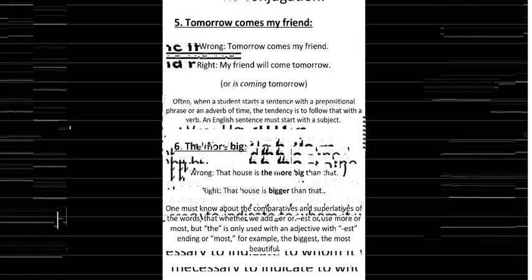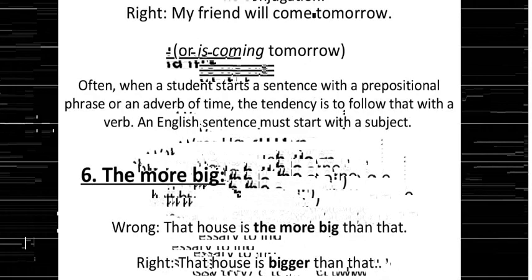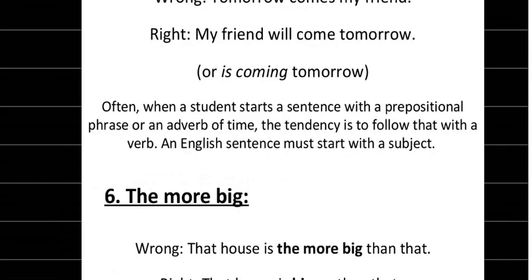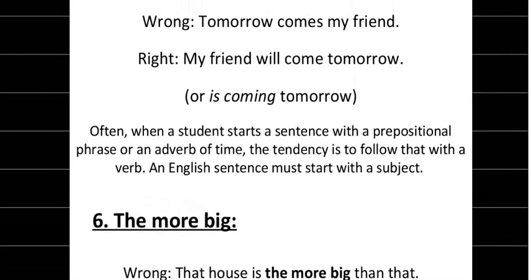The next error involves inverted word order. 'Tomorrow comes my friend' is wrong; the correct form is 'my friend will come tomorrow.' When a student starts a sentence with a prepositional phrase or adverb of time, the tendency is to follow it with a verb. However, an English sentence must start with a subject — so always begin with the subject.